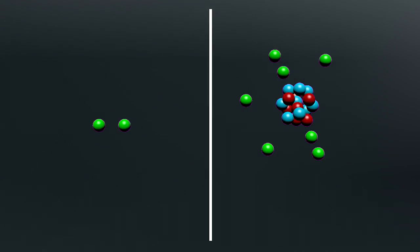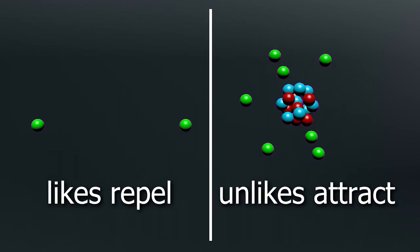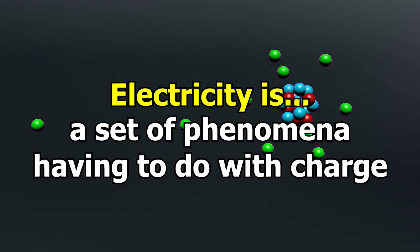Things happen when you have an unbalanced charge. Like charges repel each other. So two electrons, both having a negative charge, repel each other. And unlike charges attract each other. So a positively charged atom will attract a negatively charged electron. So once again, the definition of electricity is a set of phenomena having to do with this charge.